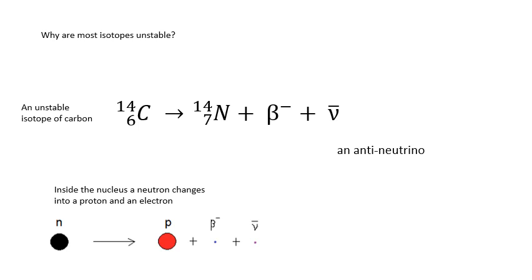However, the atomic number, the proton number, goes up by one, because you've gained a proton. The proton is positive. We get this electron produced as well. So charge is conserved. And we also get this thing called an anti-neutrino.